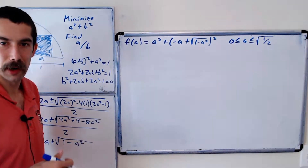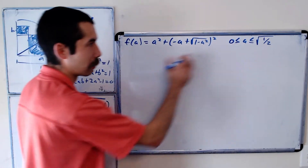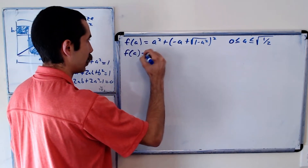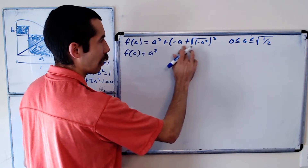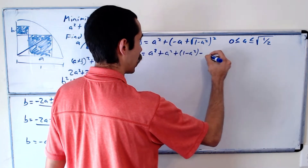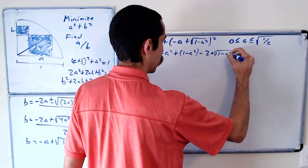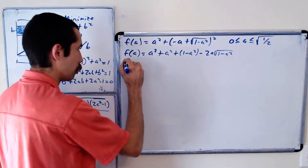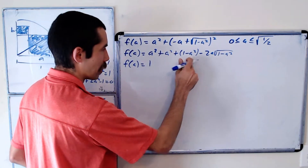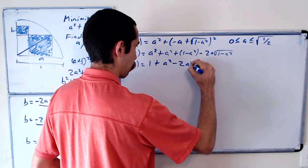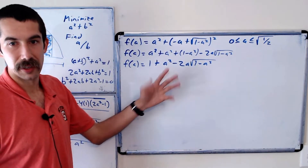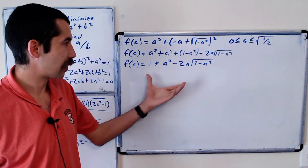We find critical numbers and test endpoints to find the minimum. Let's first expand f(a) before taking the derivative. Expanding (−a + √(1 − a²))² gives a² + 1 − a² − 2a√(1 − a²). Simplifying, the a² terms combine to give f(a) = 1 + a² − 2a√(1 − a²).